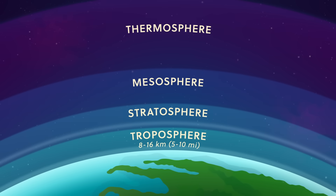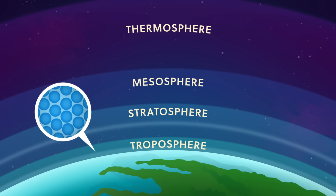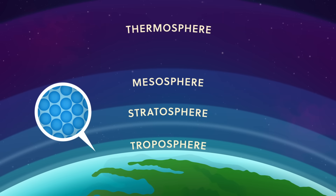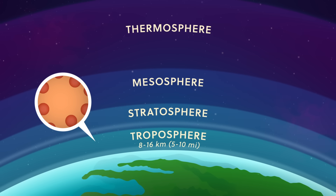That sounds kind of arbitrary, but really it's just physics. When the air molecules are cold, they huddle together, making the air denser and more compact. So in winter or near the poles, the troposphere is thinnest. And it's thickest where the air molecules spread out, like in warm places at the equator.